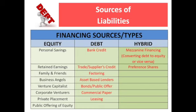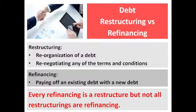Under equity, we have types like personal savings, retained earnings, family and friends, business angels, venture capitalists, corporates, private placements, and public offerings. Under debt, we look at bond credits, supplier credits, factoring, asset-based lenders, bonds, commercial paper, and leasing. And then we have mezzanine and preference shares for the hybrid type.